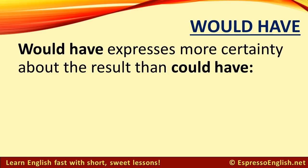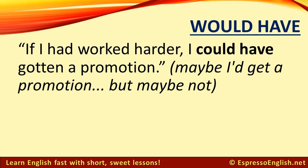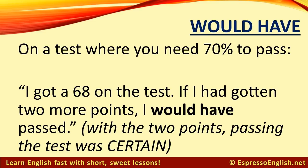Would have expresses more certainty about the result than could have. For example, if you say, If I had worked harder, I could have gotten a promotion — you're saying it was a possibility. Maybe I'd get a promotion, but maybe not. But consider a test where you need 70% to pass and you got a 68. I got a 68 on the test — if I had gotten two more points, I would have passed. Would have expresses more certainty. With the two extra points, passing the test was certain.